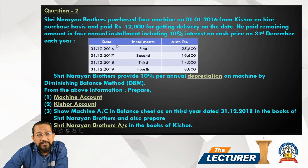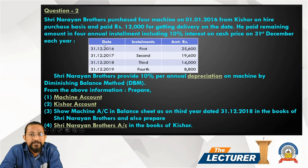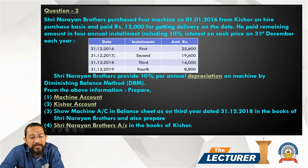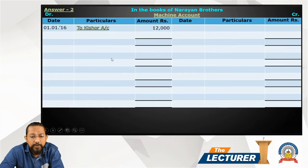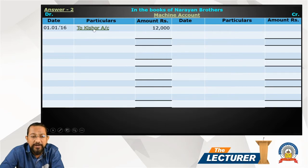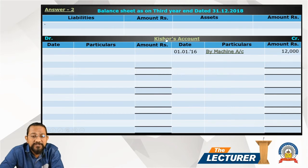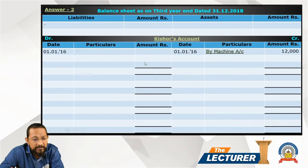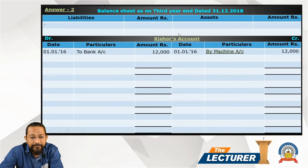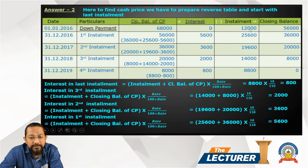Now in Narayan Brothers' books, using the asset accrual method. On receipt of the machine, the entry is: Machinery Account debit to Kisor Account. Down payment of 12,000 is paid: Kisor Account debit to Bank 12,000.